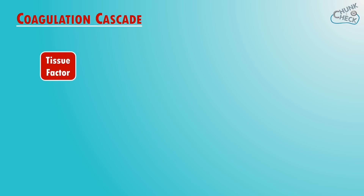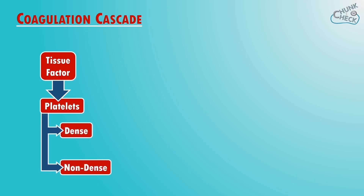After the vessel is damaged, collagen and tissue factor become exposed and this binds to platelets in two ways: directly by GP1A and indirectly by GP1B, which you might have heard being called von Willebrand factor. When this binding occurs the platelets change shape and as a result they release their granule contents to form a platelet plug.